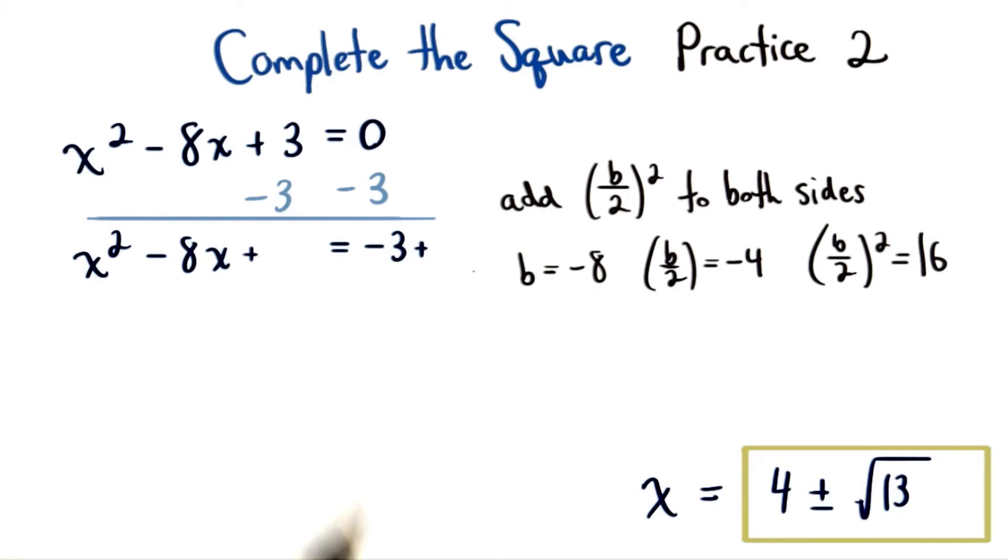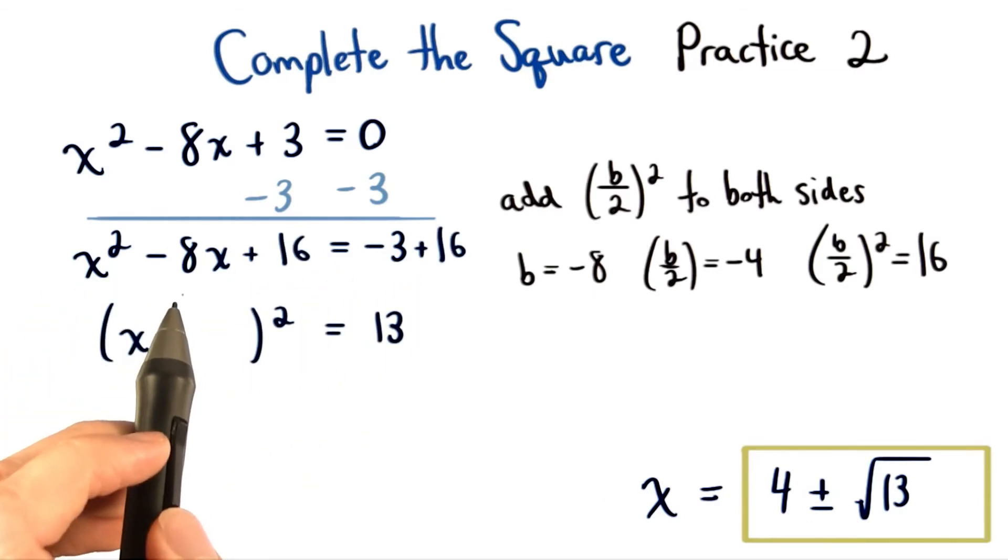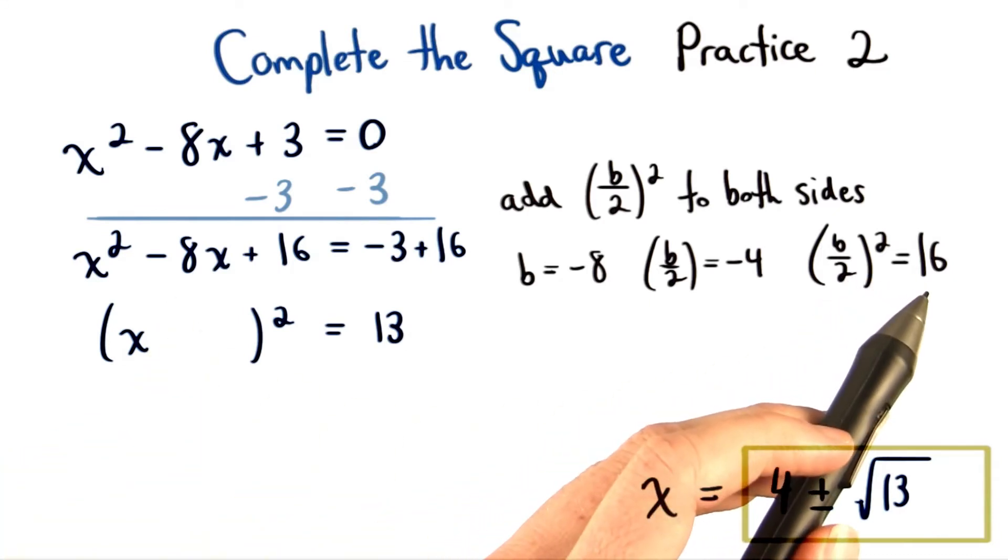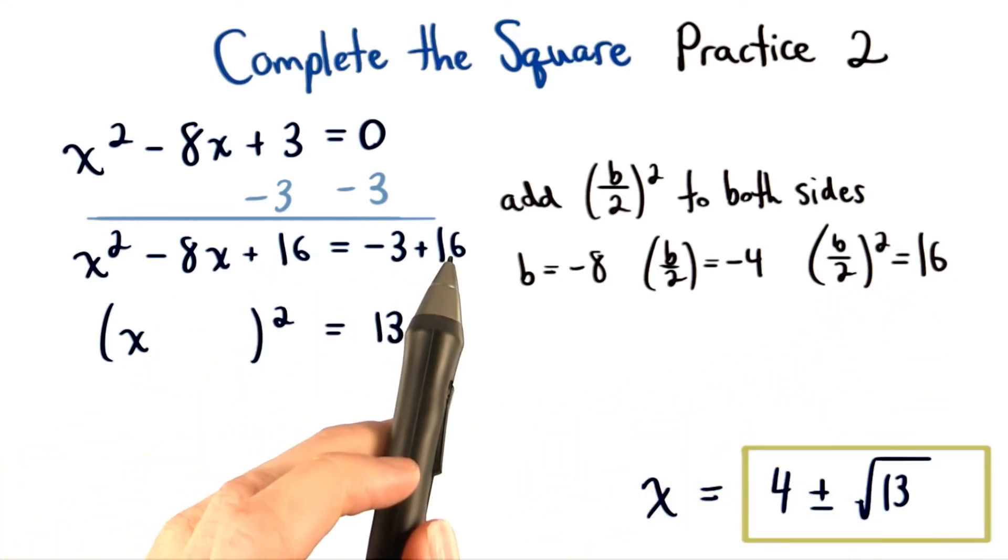Next, we want to add the same amount to both sides of our equation so that way we can complete the square. Our b is negative 8, so b over 2 squared equals positive 16. We add that amount to both sides.